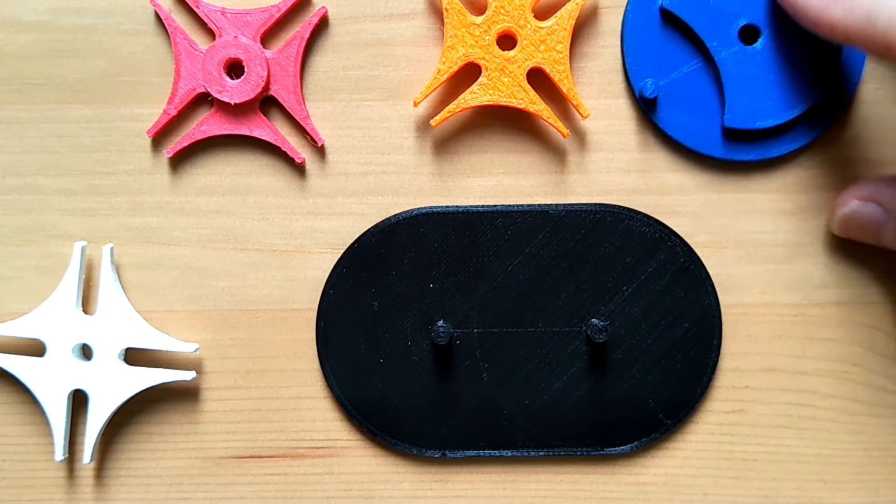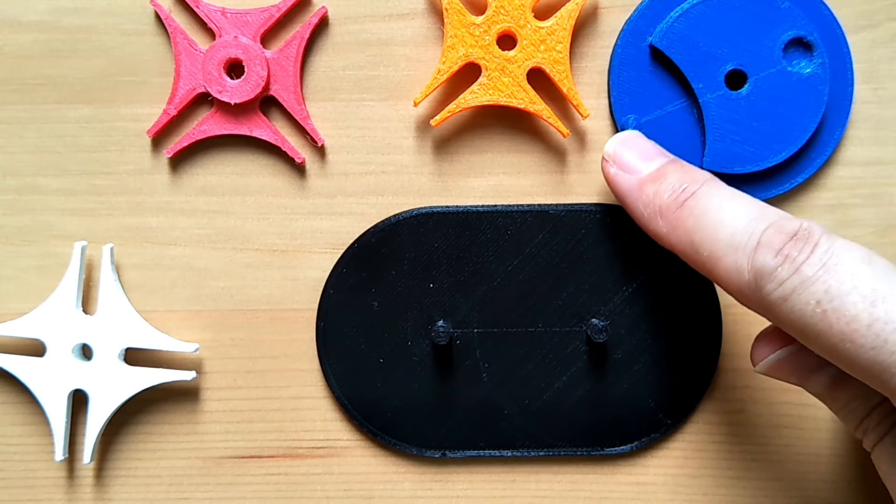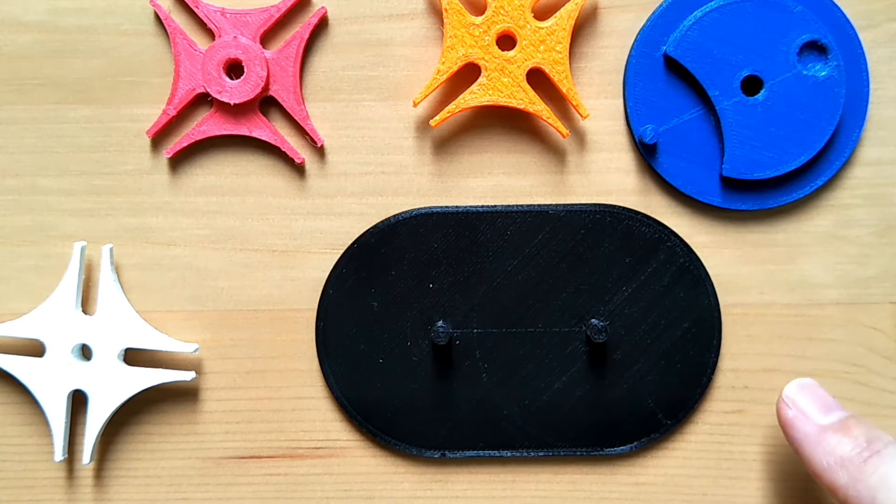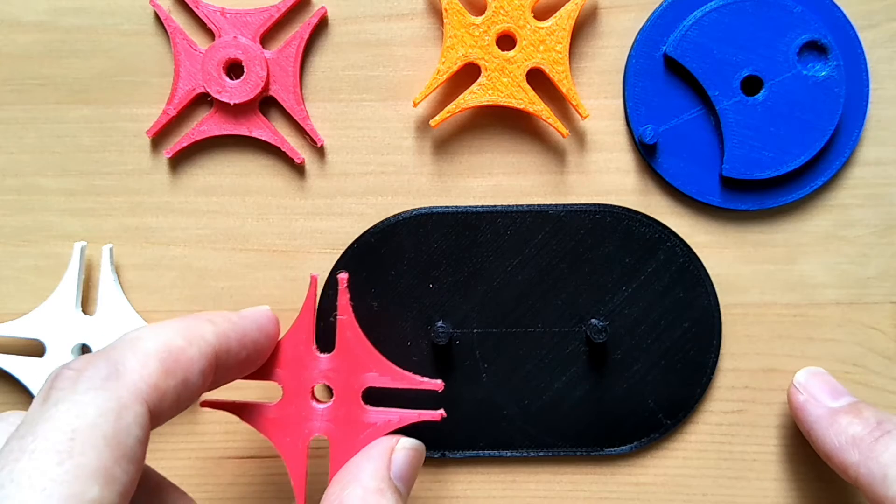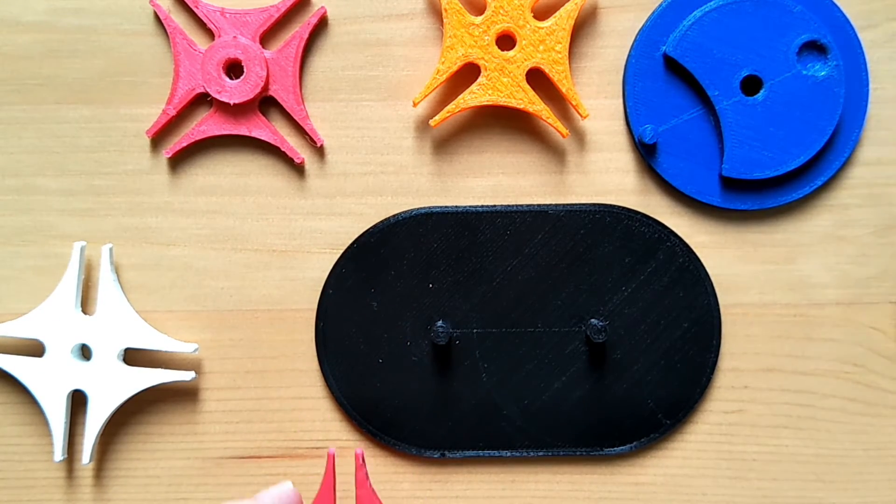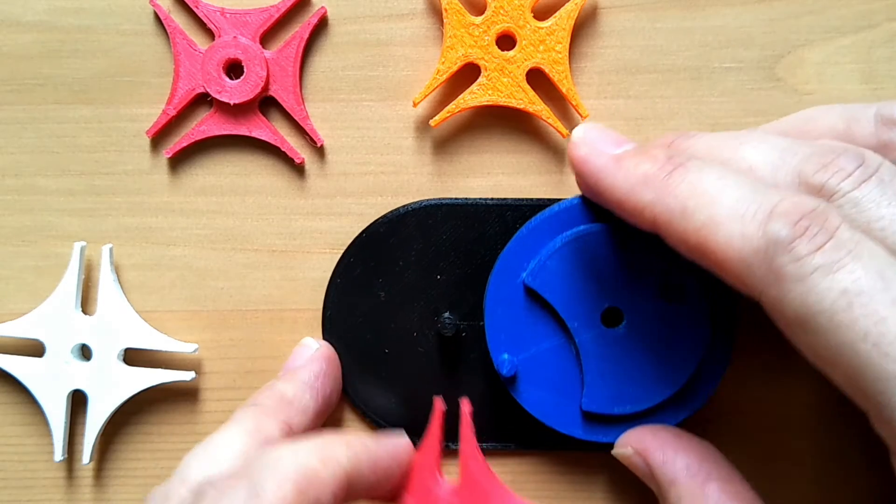Secondly is the cam with a pin driver, and then a cam circle around, and then the third one is the little follower. I've printed this in a number of different colors, as you can see here, and let's see how they go together.